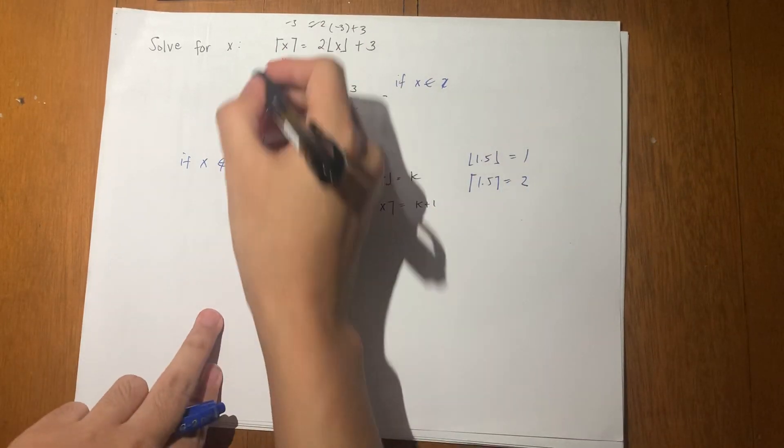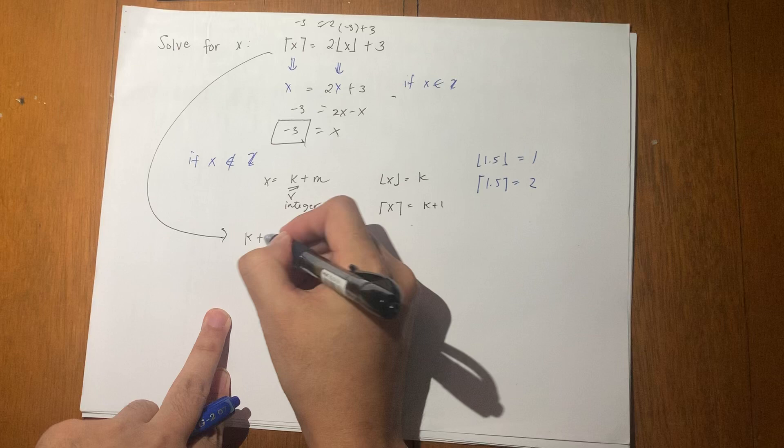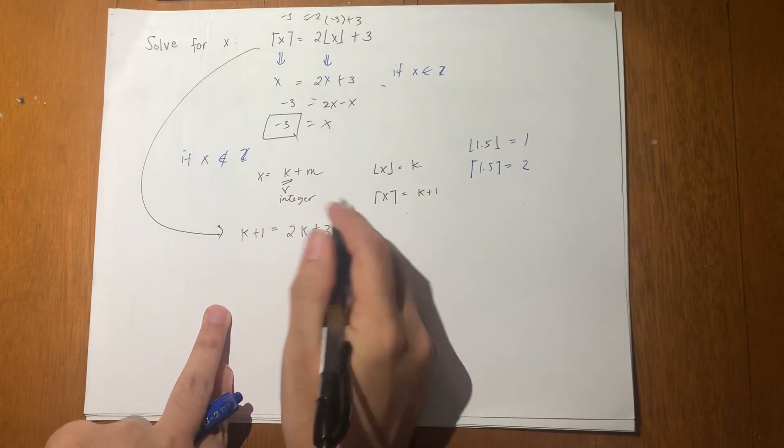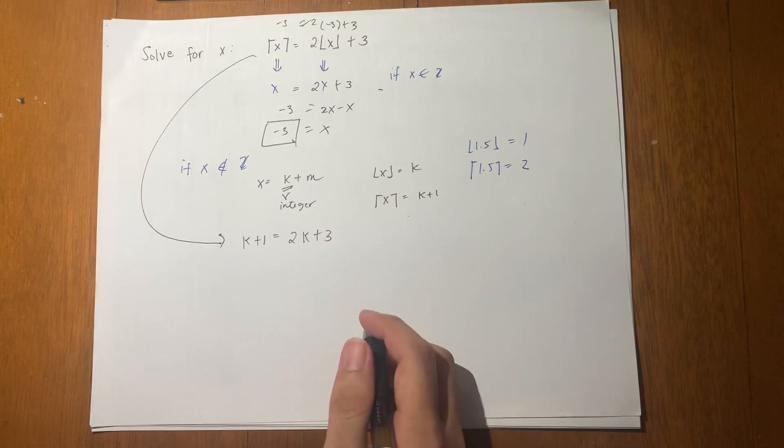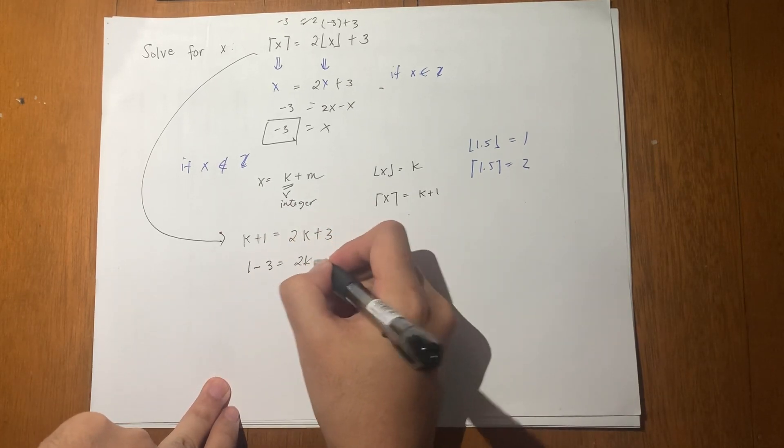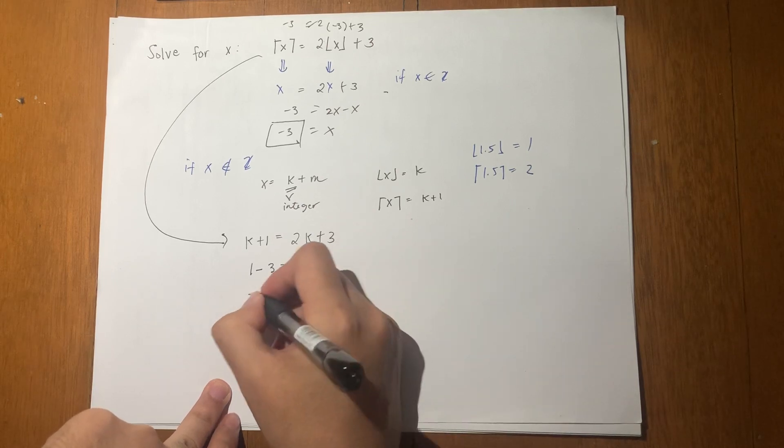So this becomes k plus 1 equals 2 times k plus 3. Simplifying this, 1 minus 3 equals 2k minus k. K equals negative 2.